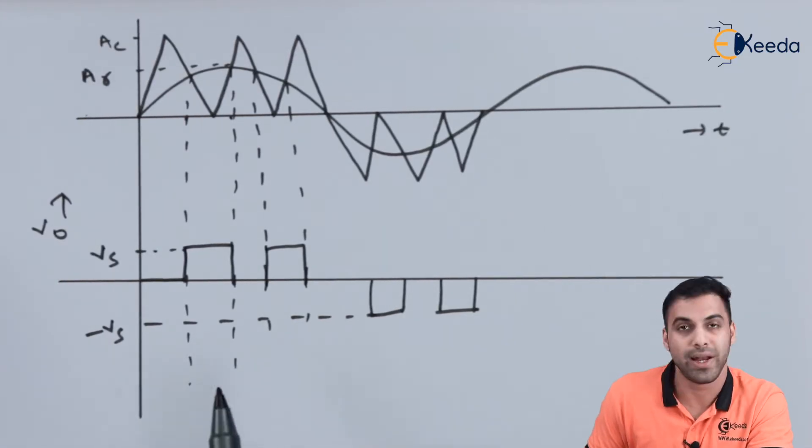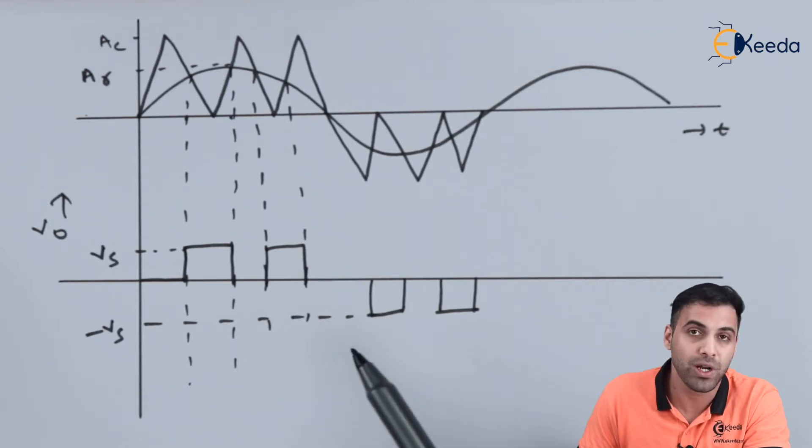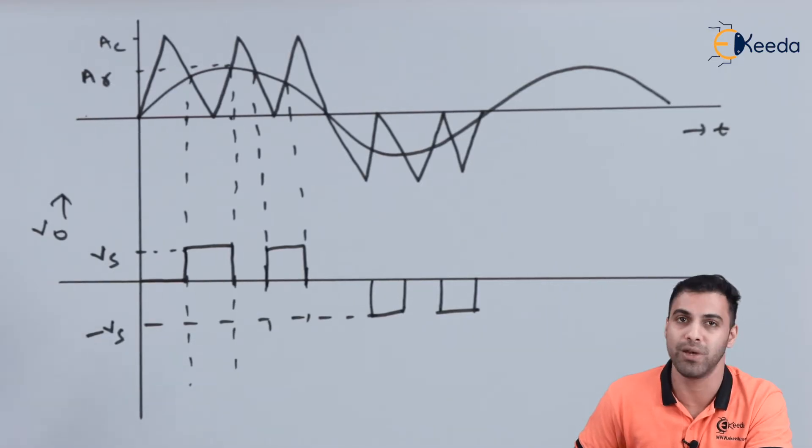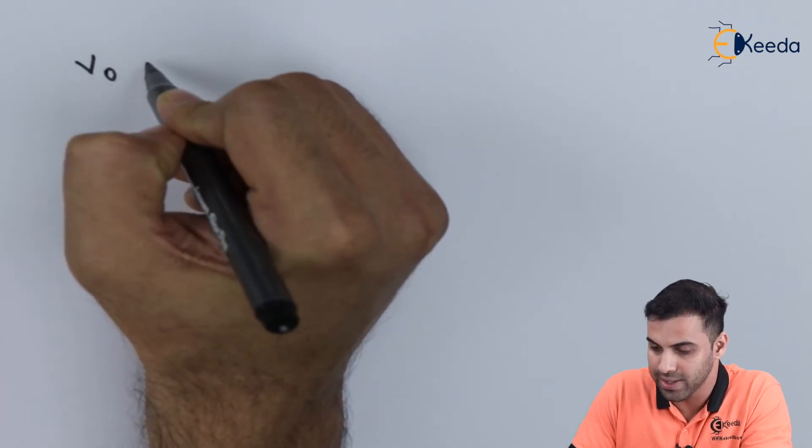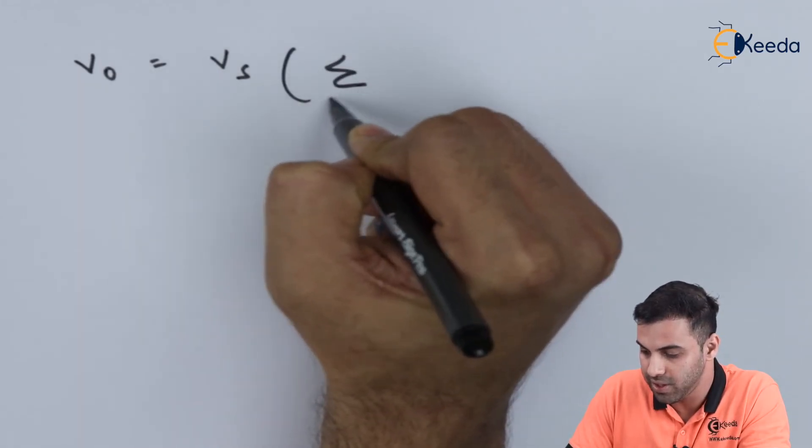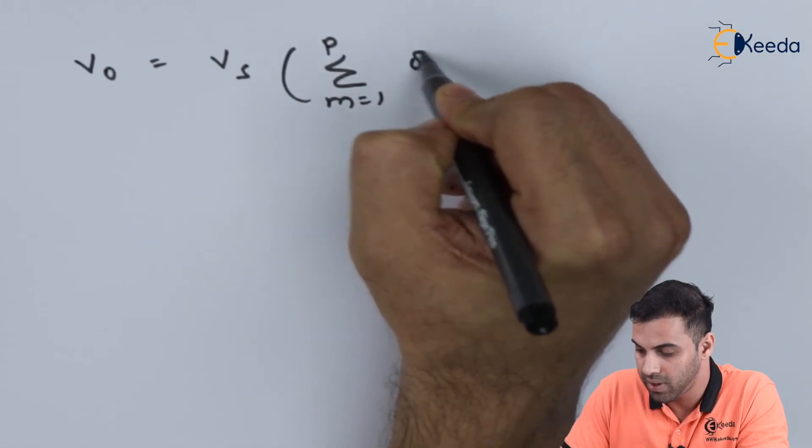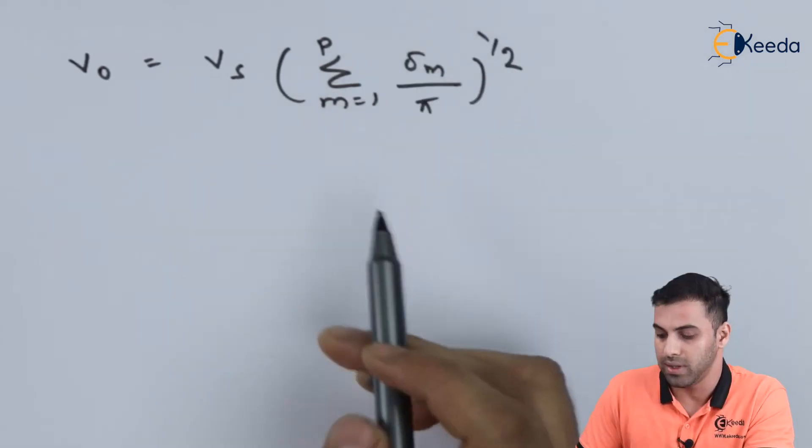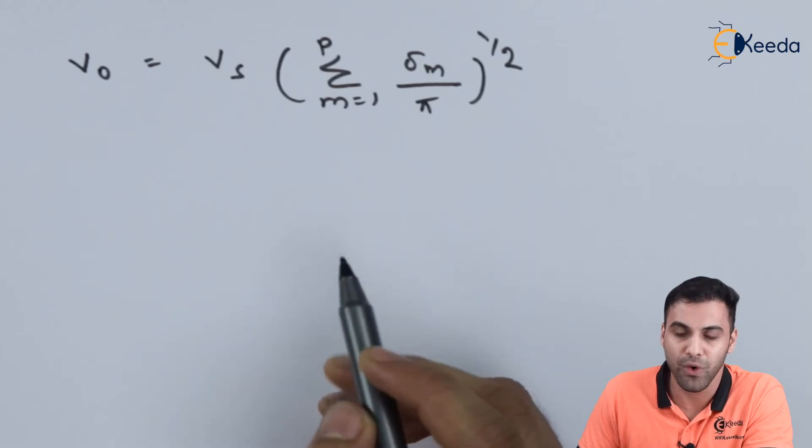So let's calculate the output voltage RMS value and the instantaneous value and constants a_n and b_n. How to calculate it? What will be the value of it? The output voltage average value will be equal to VS into summation m equals 1 to p del_m divided by pi and under root. This will be the average value of the output voltage.